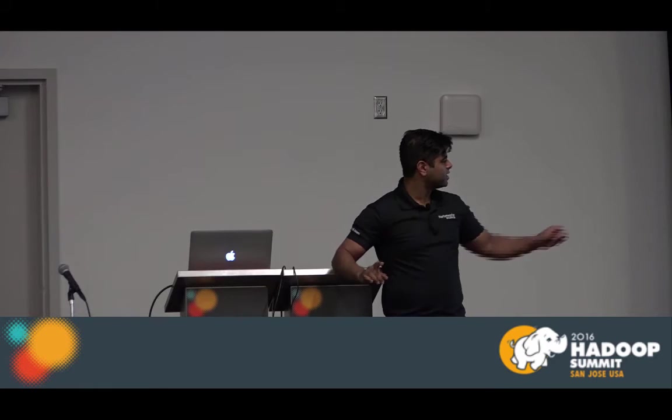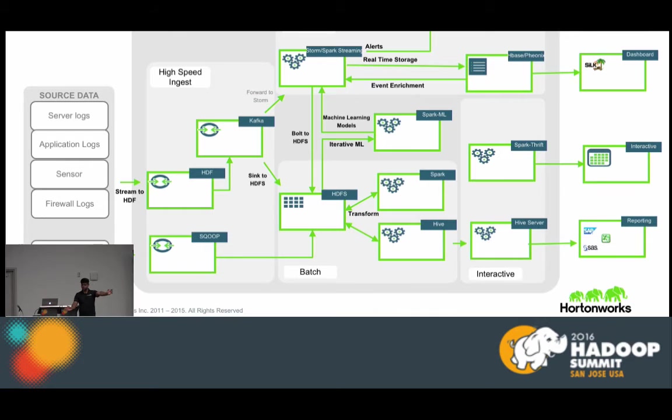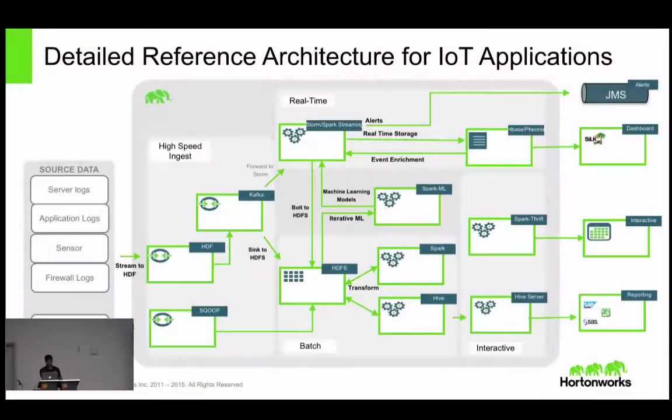A question about data forking: data is forked in the sense that from Kafka — or it can happen from NiFi directly — at some point you have to send one stream to the real-time stream portion, and the other end has to go into batch processing or HDFS. So you just make a copy of the data.